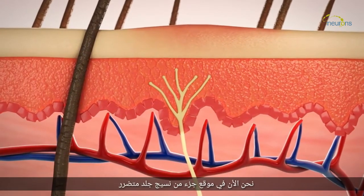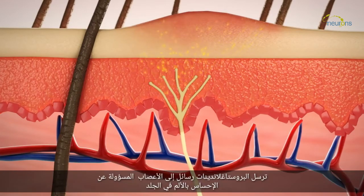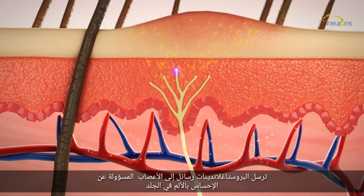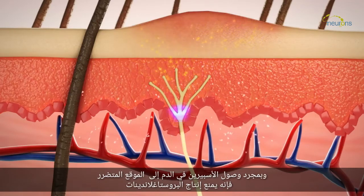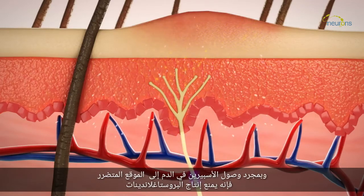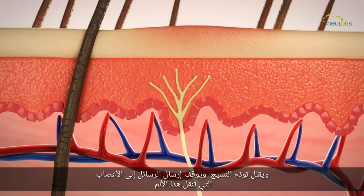We are now at the site of some skin tissue damage. Tissues in the skin are creating prostaglandins, which are causing inflammation. The prostaglandins are sending messages to the nerves in the skin responsible for the sensation of pain. Once the aspirin arrives in the blood supply at the site, it prevents the production of prostaglandins in the tissue, which will reduce the swelling and stop the messages being sent to the nerves that are perceived as pain.